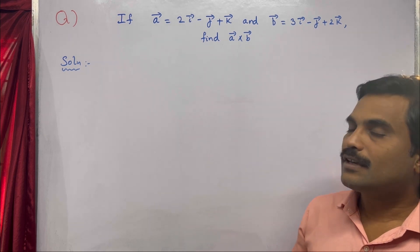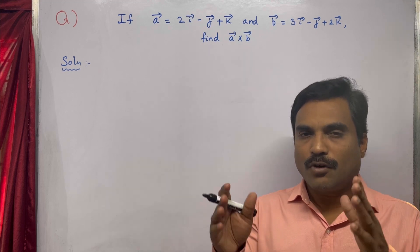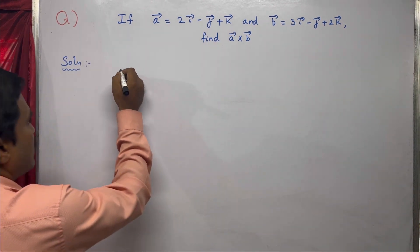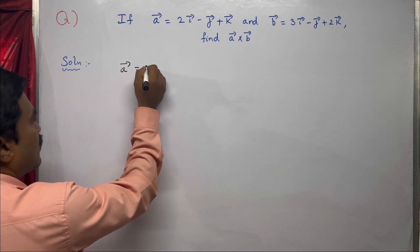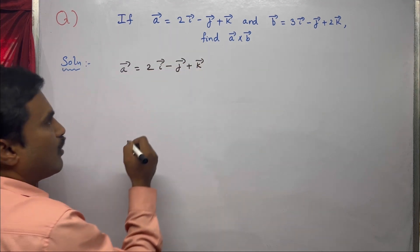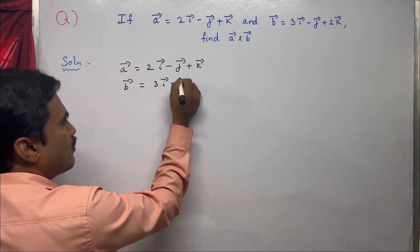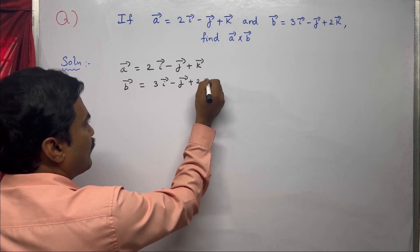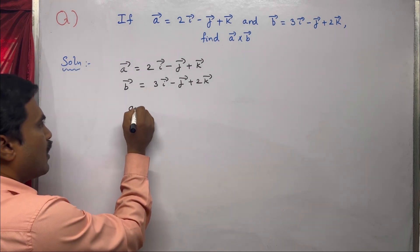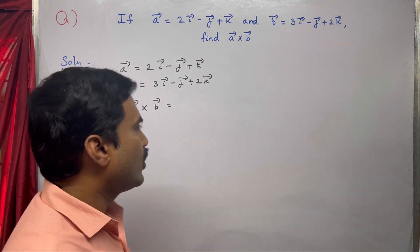Here, two vectors a̅ and b̅ are given and you need to find the cross product between them. To do this, you have to form a determinant of order 3×3.